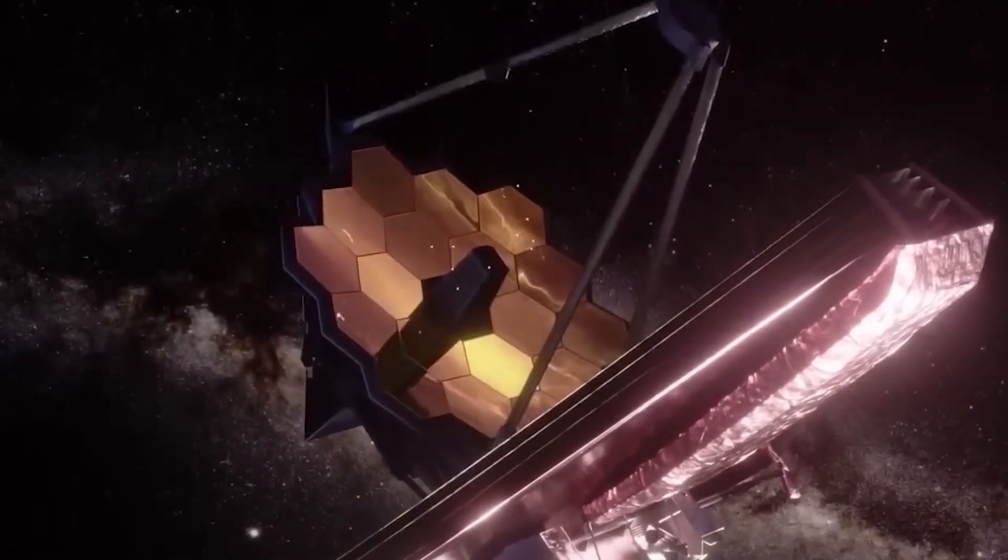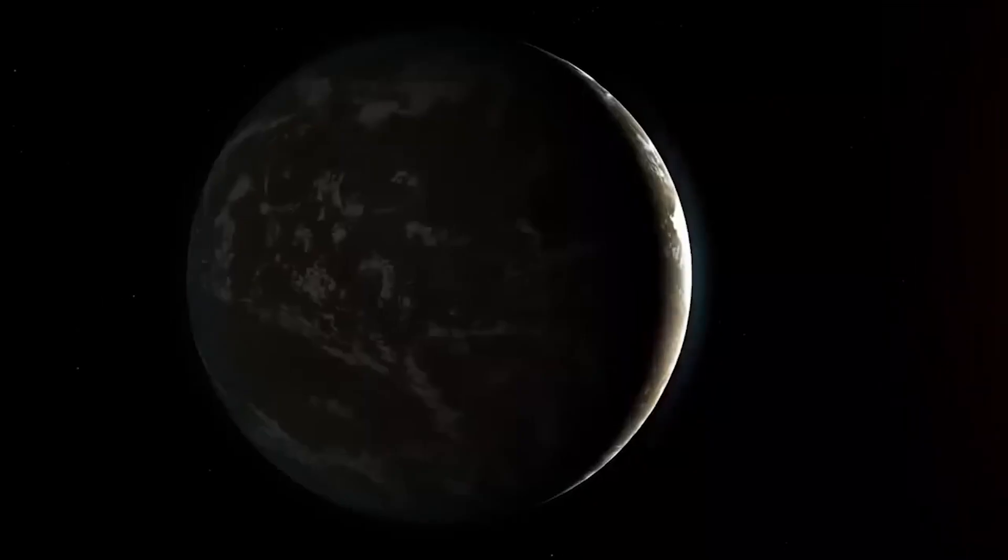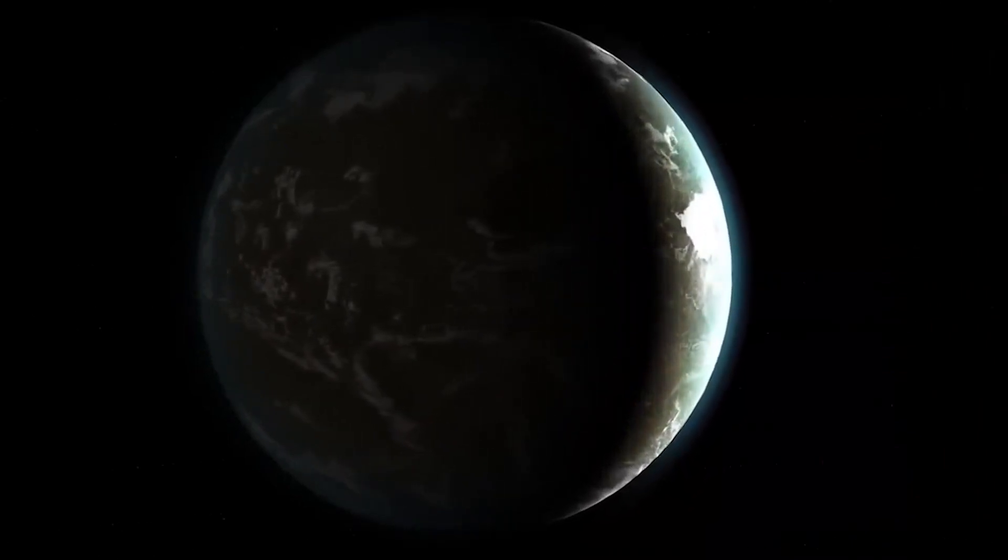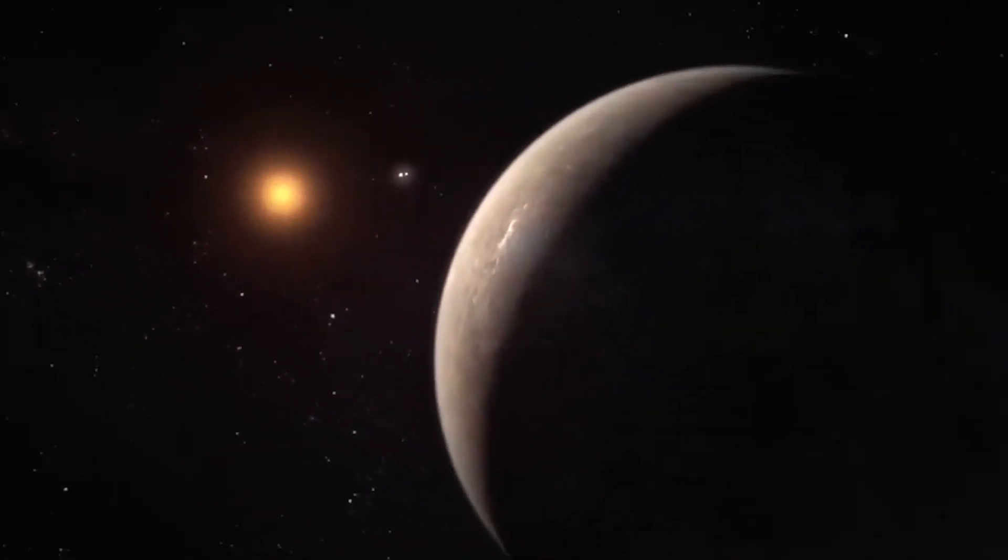Using the radial velocity method, ESPRESSO identifies planets by observing the tiny jerks in a star's motion brought on by the gravitational pull of an orbiting planet. These pulls were incredibly light in the case of Proxima d, equivalent to a planet with a minimum mass of one-fourth that of Earth.